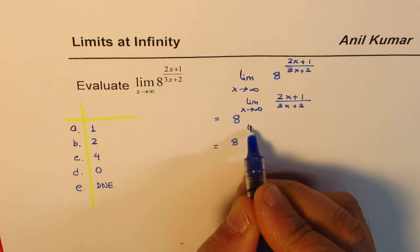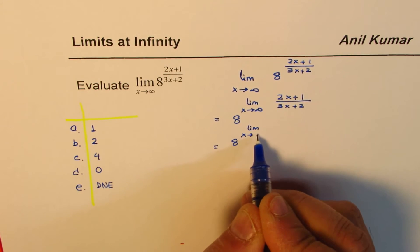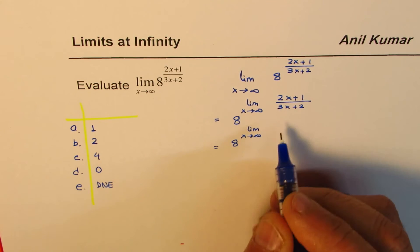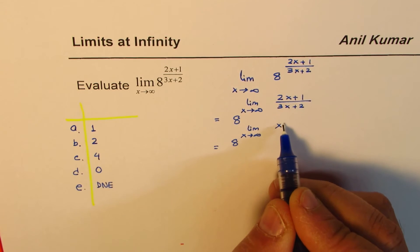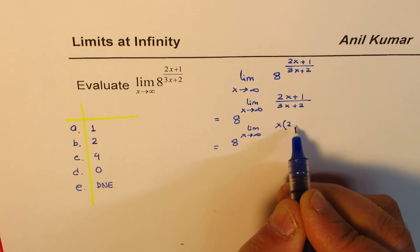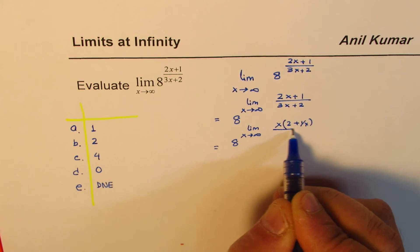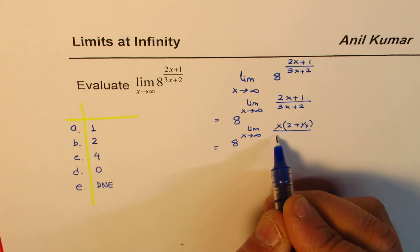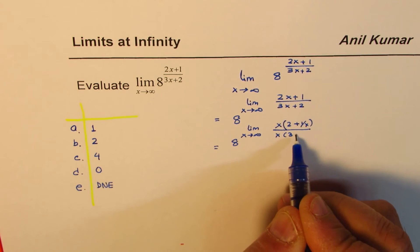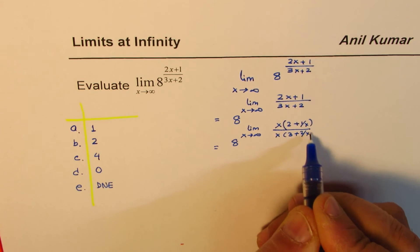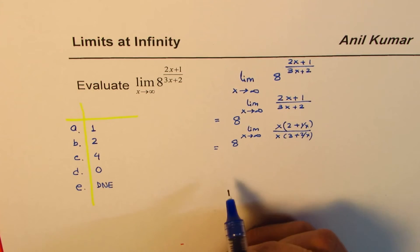So we could write this as limit x approaches infinity. If I take x common from the numerator, I get 2 plus 1 over x. And in the denominator, if I take x common, I get 3 plus 2 over x. So these are all exponents of 8.